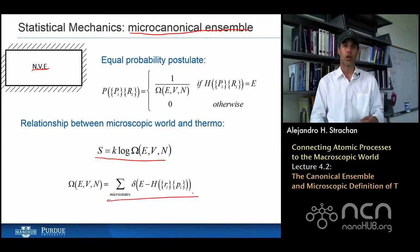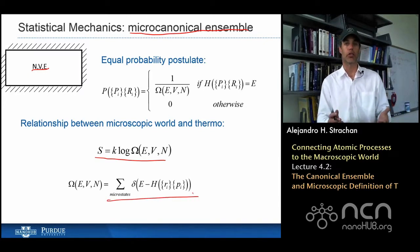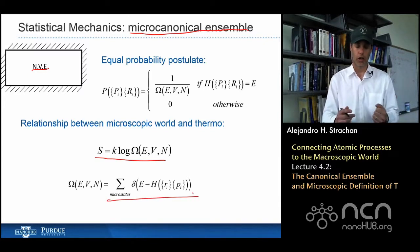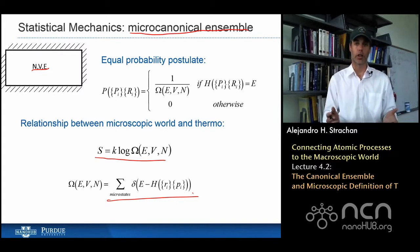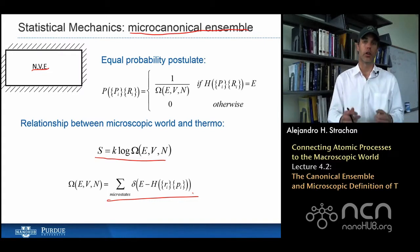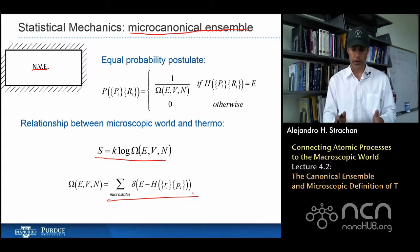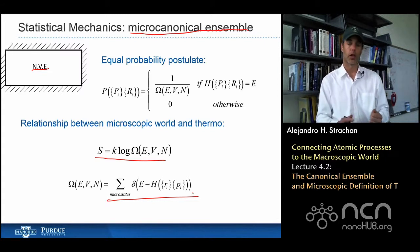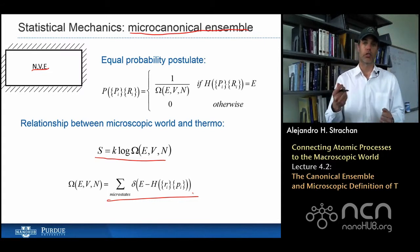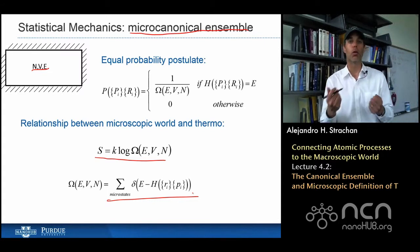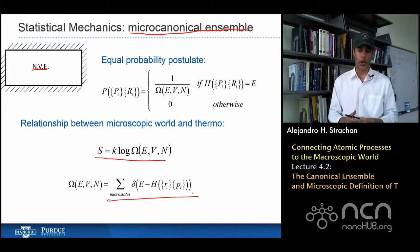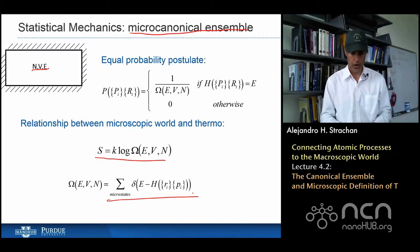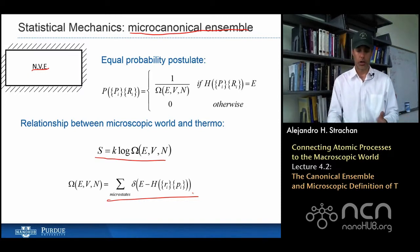The number of states is a sum over all microstates of a Dirac delta function, which is zero whenever the argument is not zero, and is non-zero only for the states with energy E. So that's where we are now.